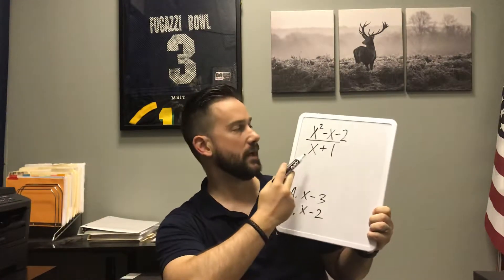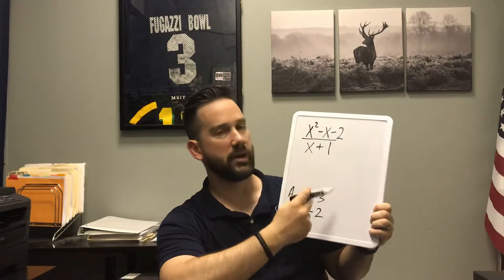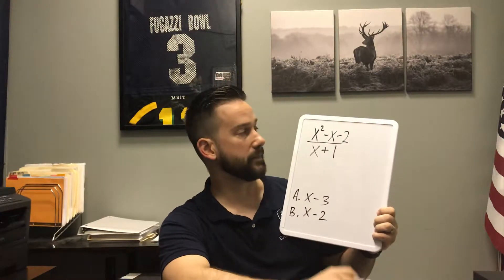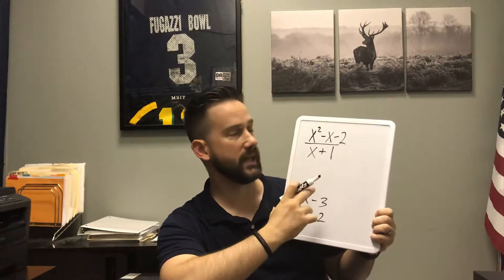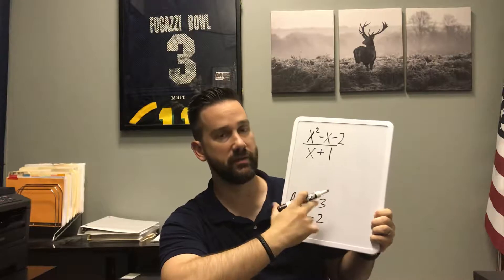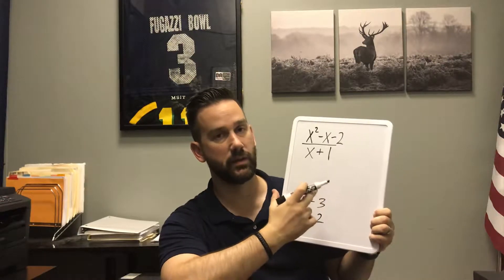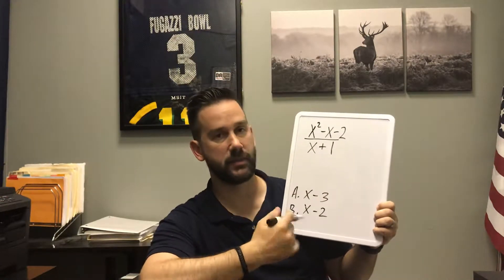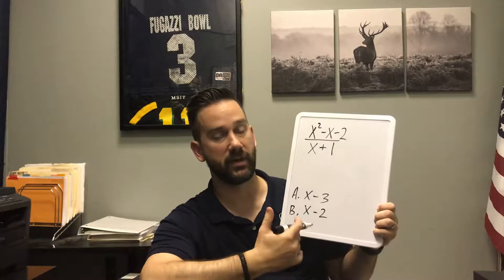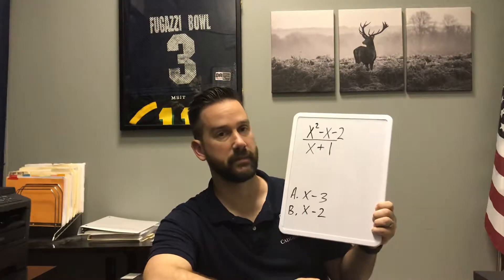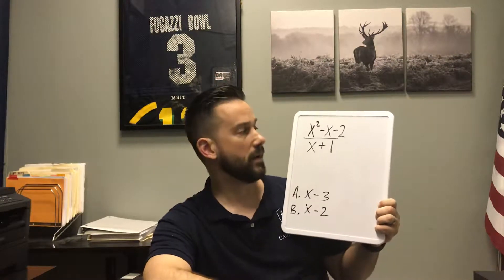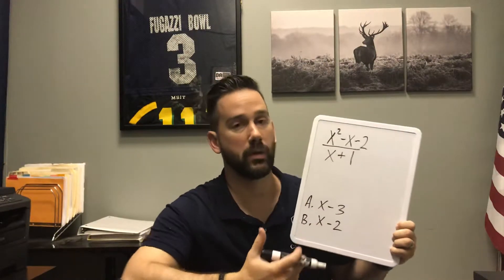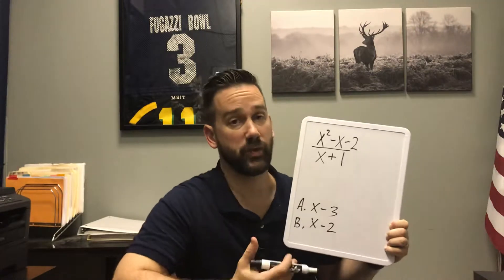So here we have x squared minus x minus 2 over x plus 1. And it wants us to evaluate or simplify it to find a similar or equivalent expression. We can do this algebraically, but we're going to go over this with the trick.